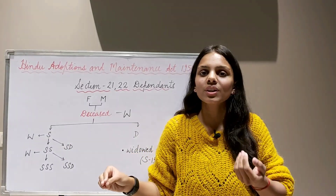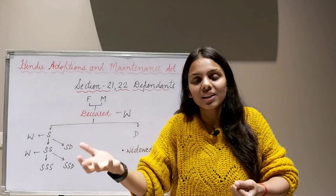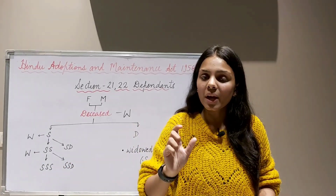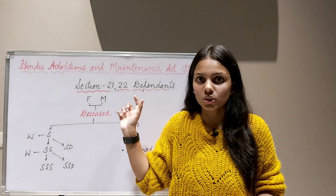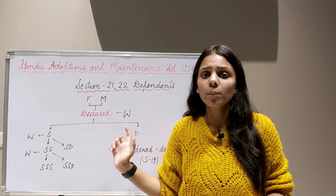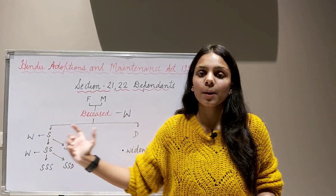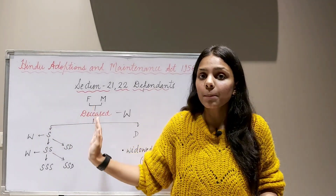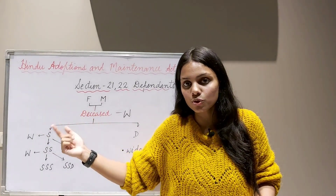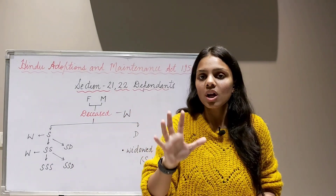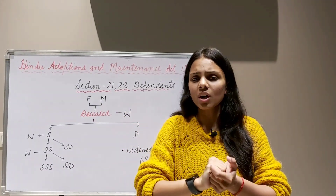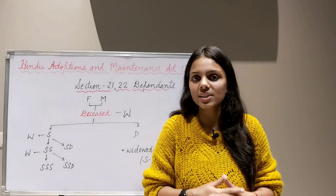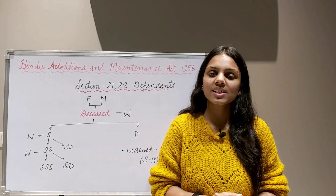This was all about maintenance of dependents under Sections 21 and 22 of the Hindu Adoptions and Maintenance Act 1956 — who qualifies as a dependent, how maintenance is claimed from the deceased's estate, and how legal heirs are proportionally bound to provide it. Thank you and bye-bye.